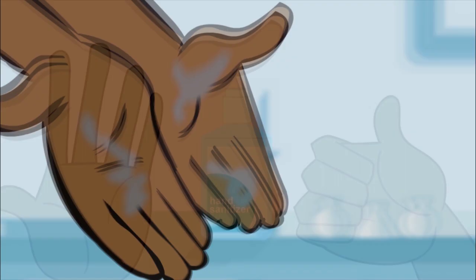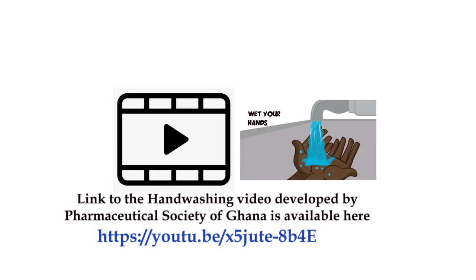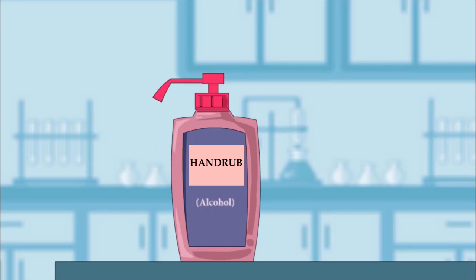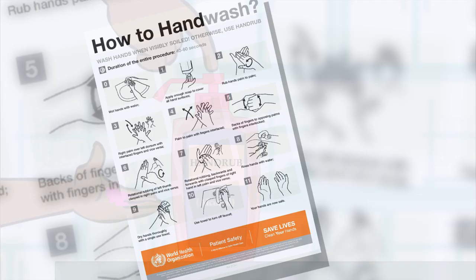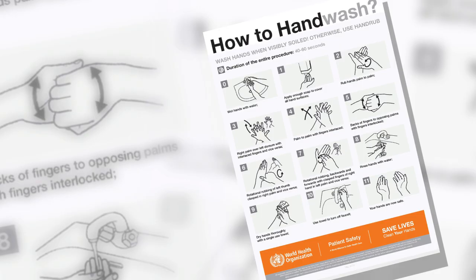If your hands are visibly dirty, then it is important to wash your hands with soap and water. The correct technique can be found in this short video. Otherwise, hand rub can be used. Rubbing or washing for at least 20 seconds is needed to be effective.